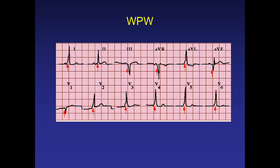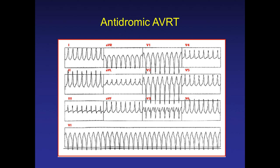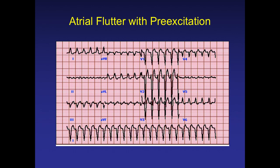If someone is having pre-excitation and is symptomatic, as Dr. Deena Nath clarified, that is the only time we should call it WPW — clinical features must be present. This is antidromic AVRT, where conduction goes down the accessory pathway and retrograde through the normal conduction pathway. In orthodromic conduction, it goes normally down the conduction system and retrograde through the accessory pathway.